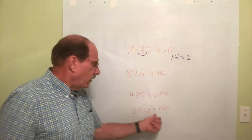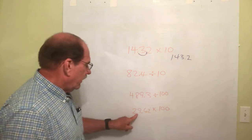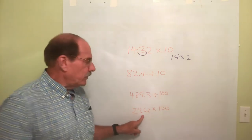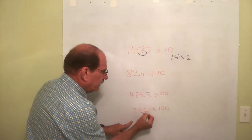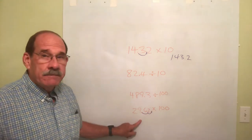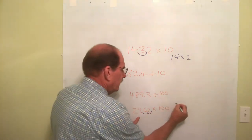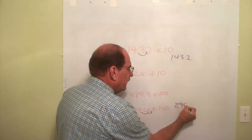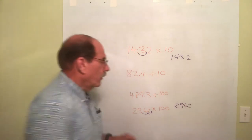I'm moving to the right because it's multiplying. So we start with 29.62. I move that dot one place, two places. It ends up right there. So the final answer is 2,962. Well, there we go.